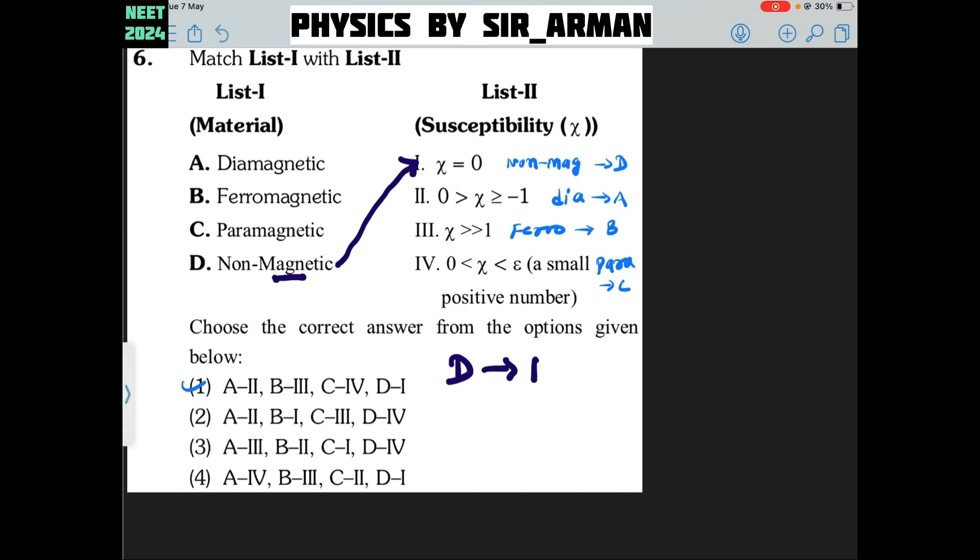Then paramagnetic or let us say ferromagnetic. Ferromagnetic have the highest susceptibility. So B correspond to 3.